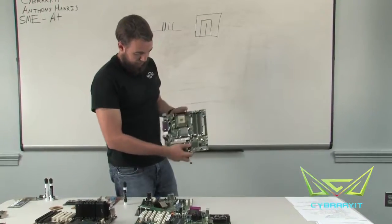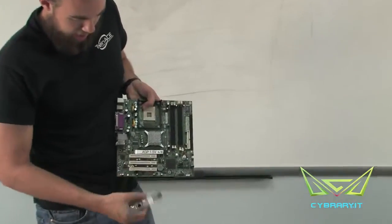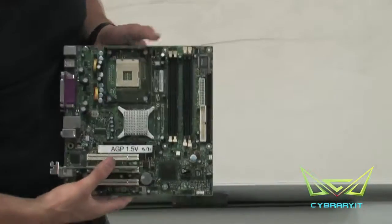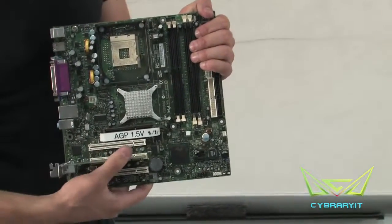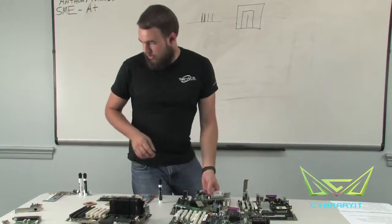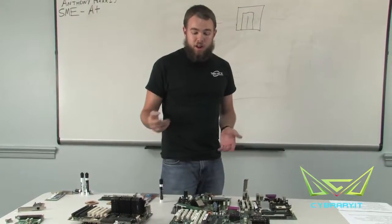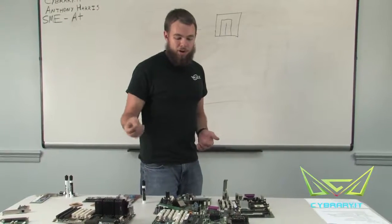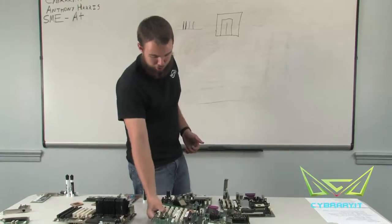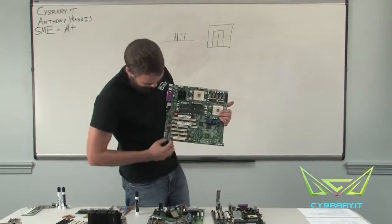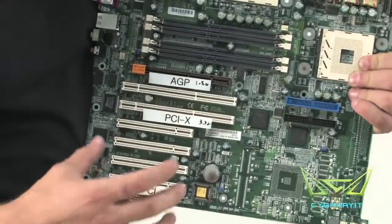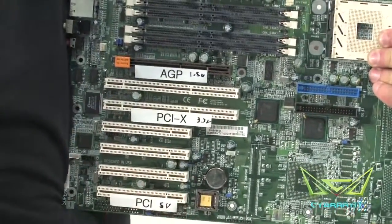Say if we have a PCI slot that we need to plug an ethernet adapter into — we can plug that in and it's going to give it enough power to operate. Certain connections such as accelerated graphics cards may need additional power that the slot itself won't provide. There may be additional power points on your motherboard, such as this one here, which can provide additional power to those particular components if they need it.